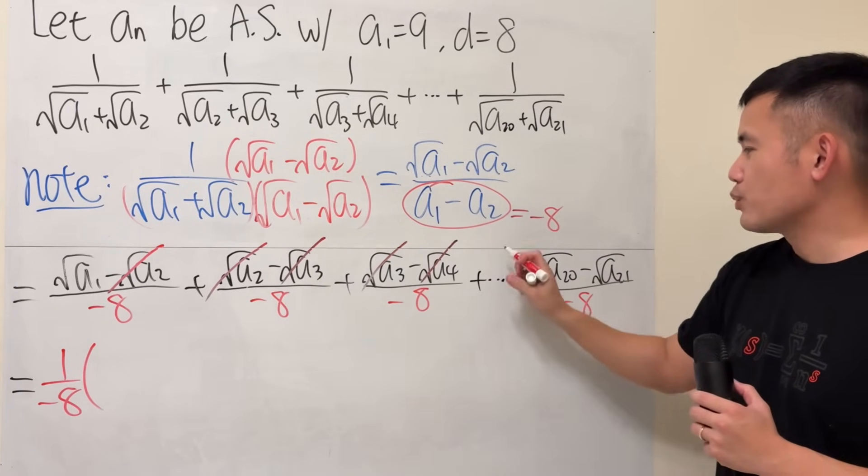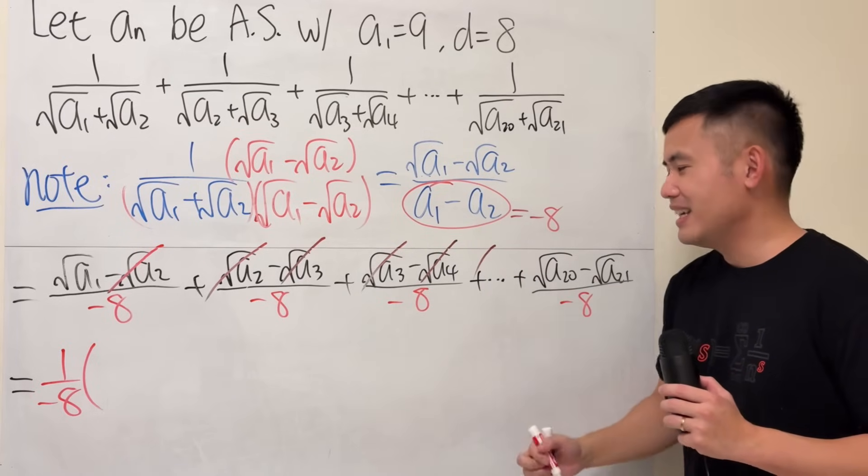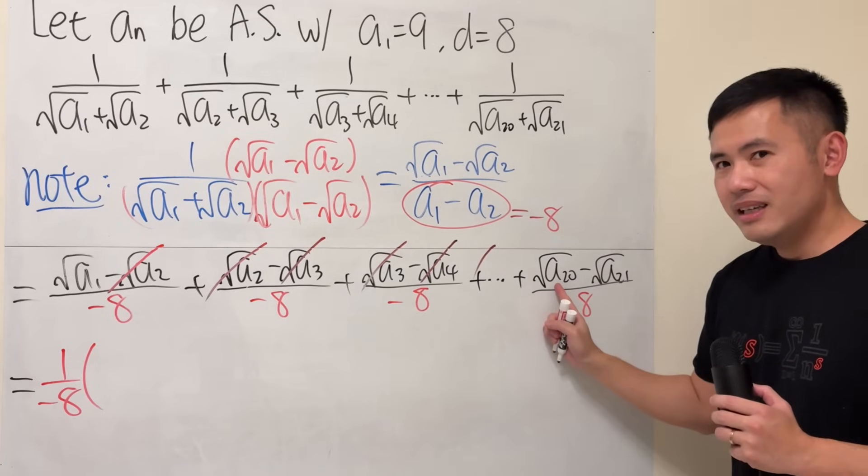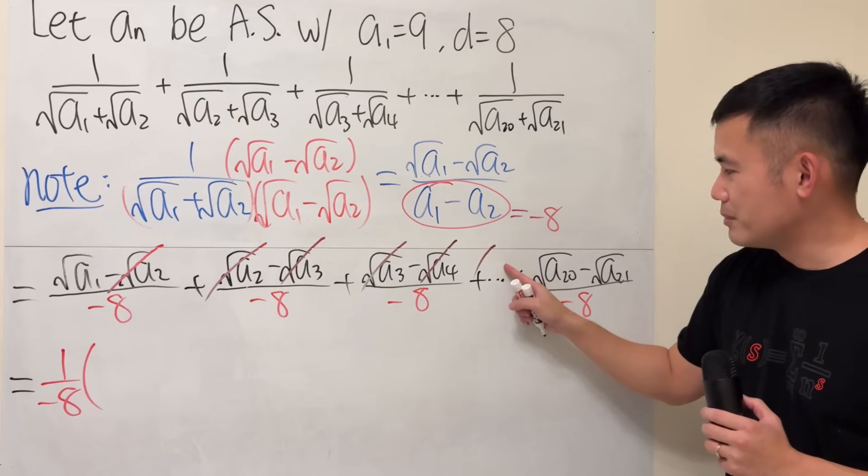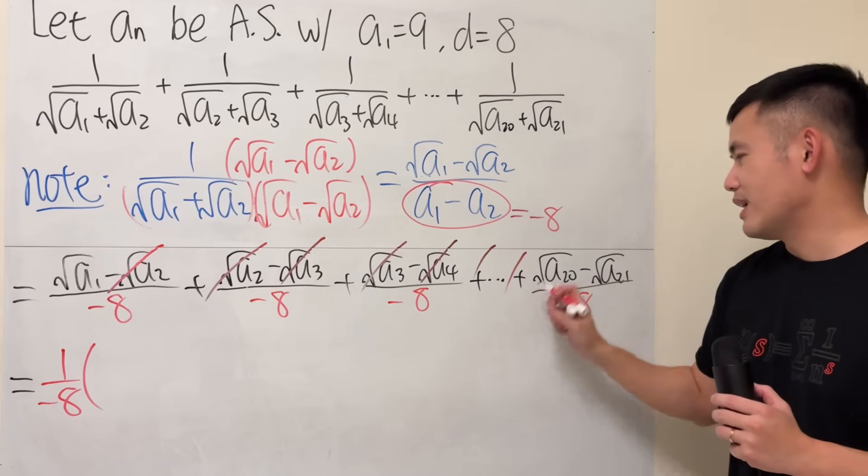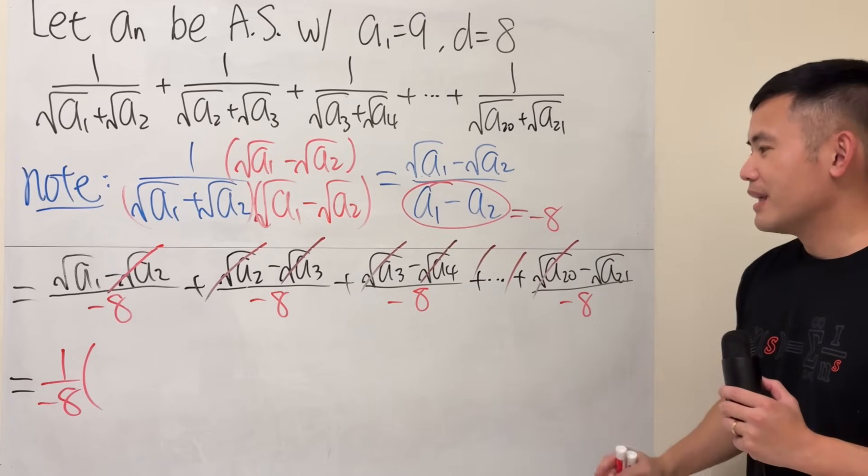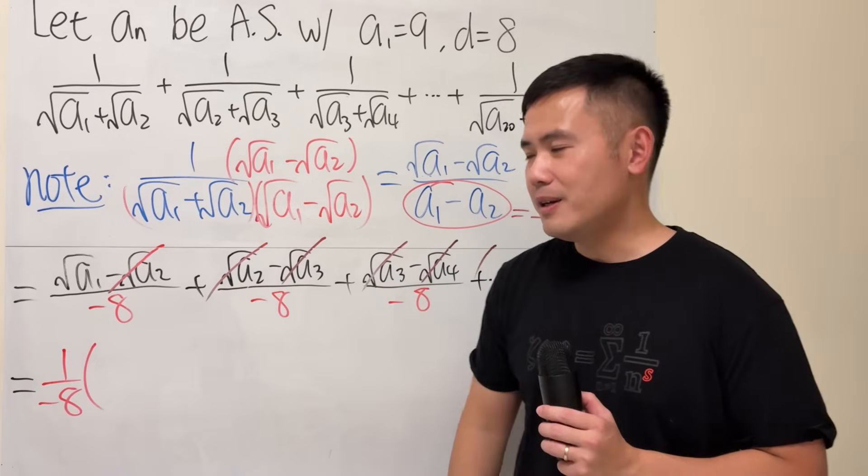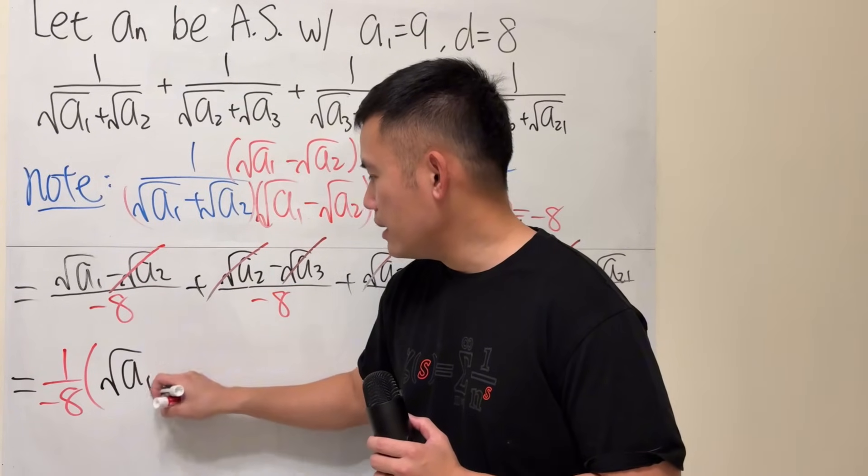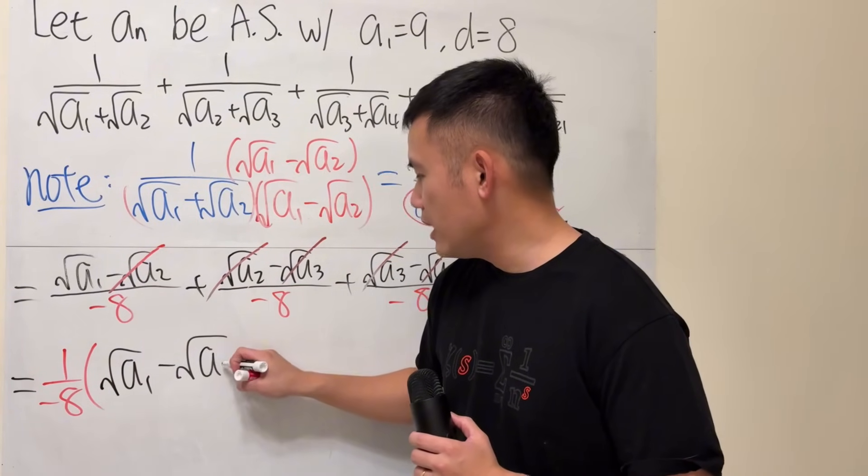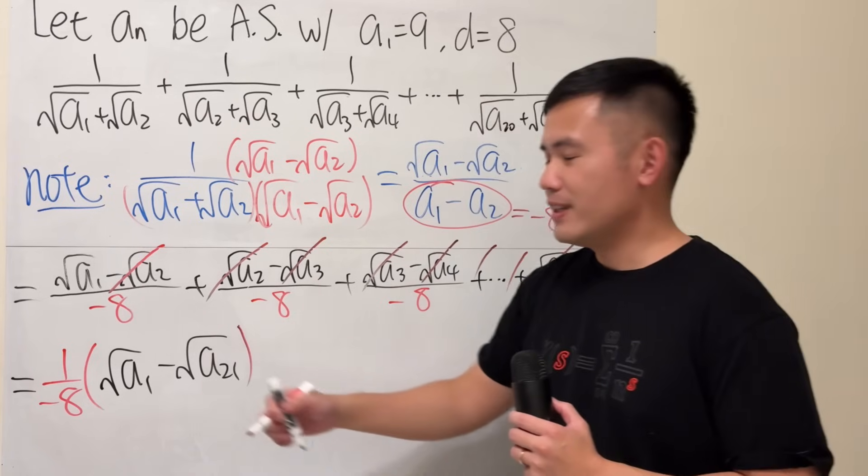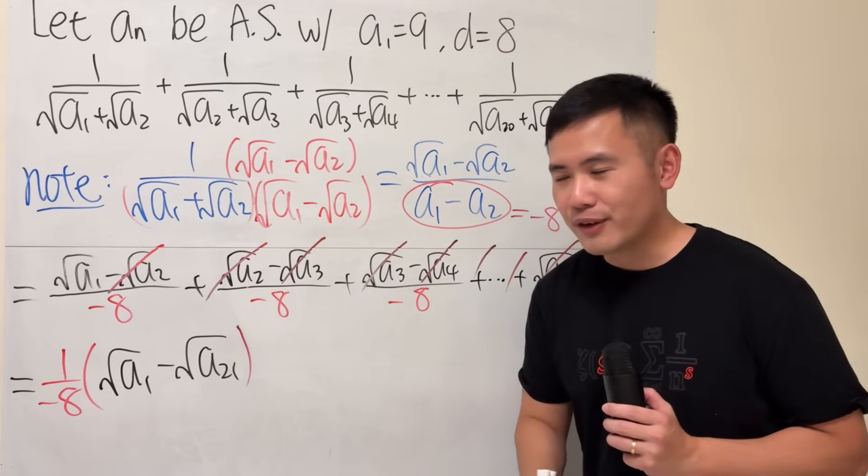This, it's going to cancel with the next one. And so on, so on, so on, right? And then, this, it's going to be canceled with the term in the front as well. I just didn't write it down. But it's going to cancel as well. So, once you put them together, we just have square root of a1 minus square root of a21. Very nice, huh?